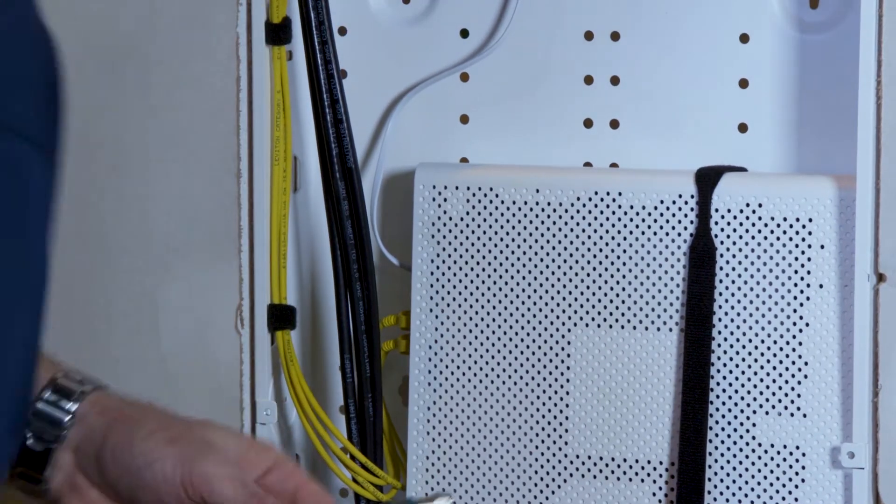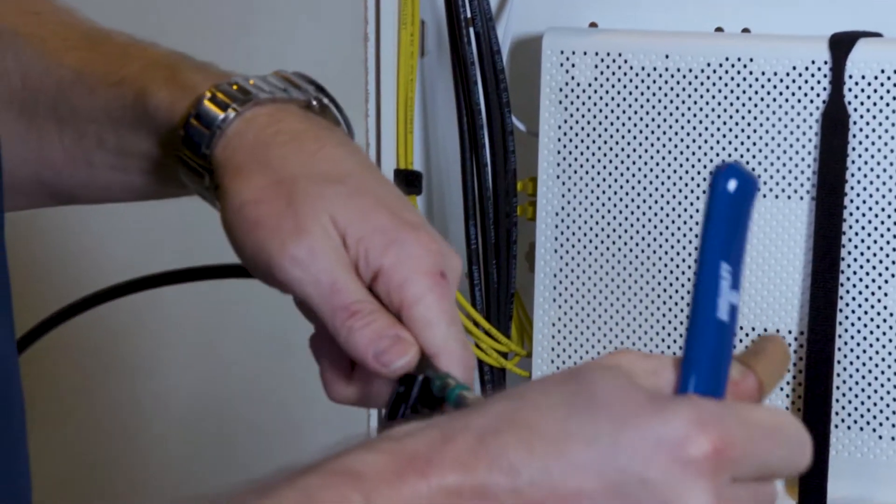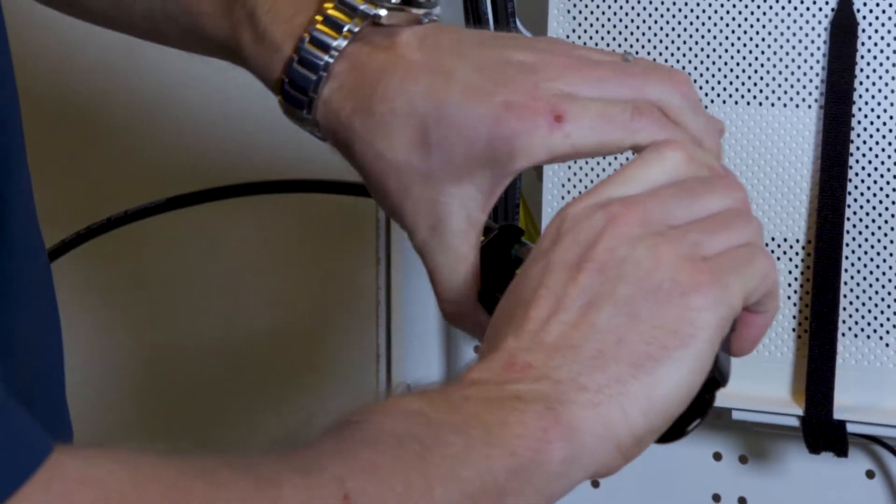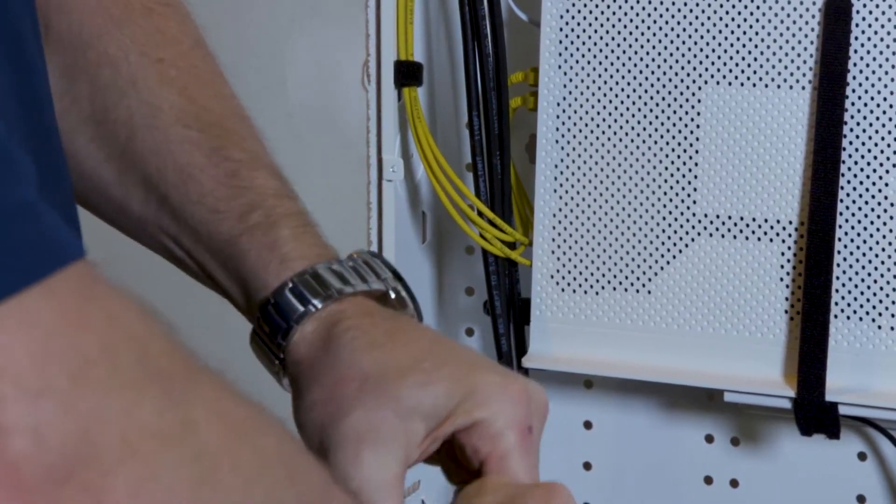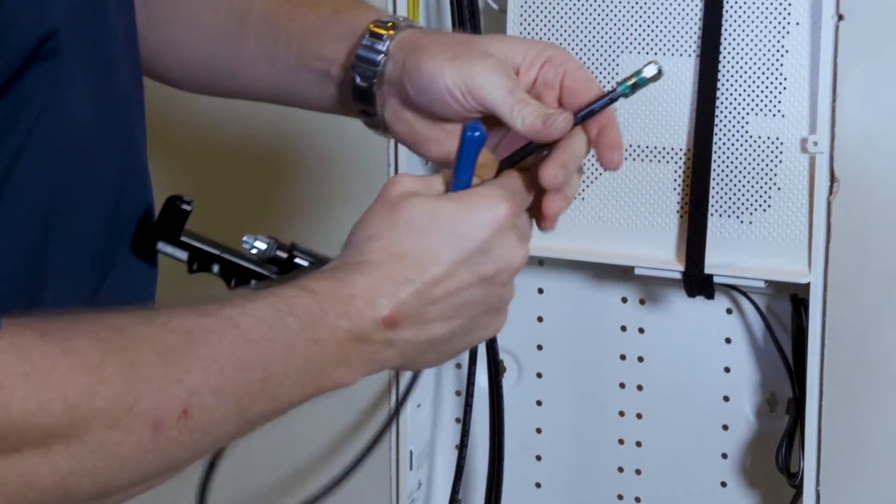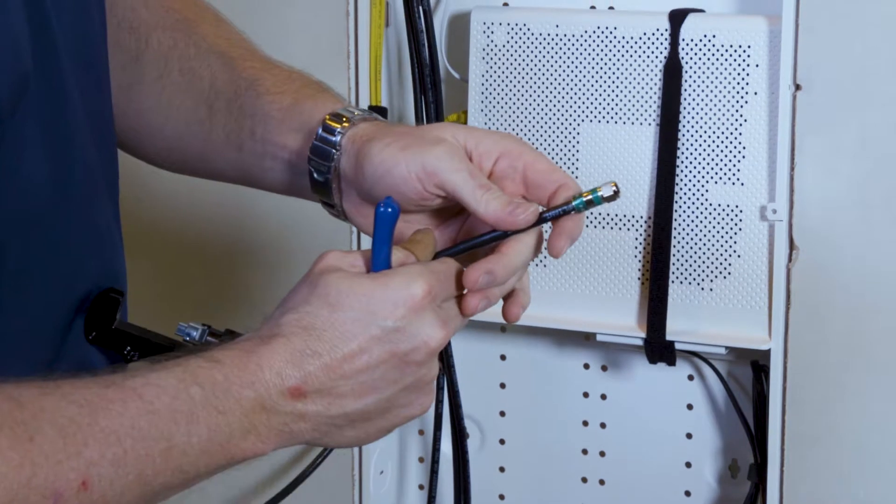So we'll take our crimp tool and use our compression tool and compress this fitting onto the cable. And that's our termination complete for RG6 quad.